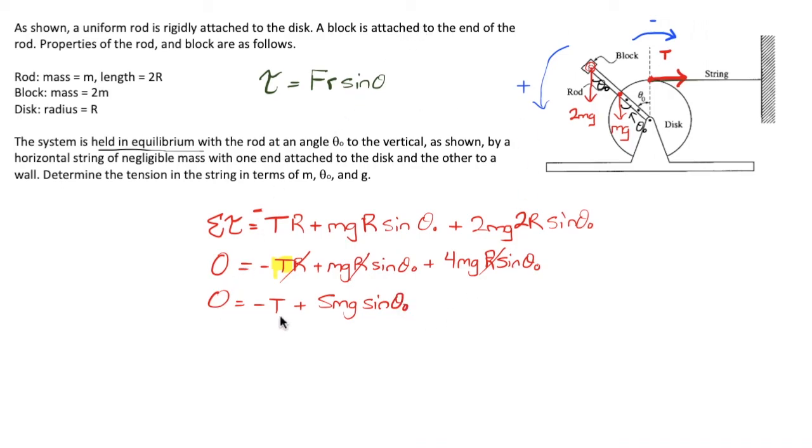So 0 is equal to negative T plus 5mg sine theta naught, which is algebraically equivalent to T being equal to 5mg sine theta naught. And that actually concludes this one part problem.